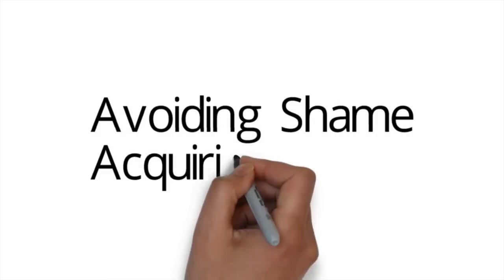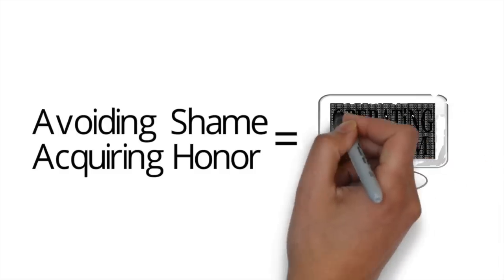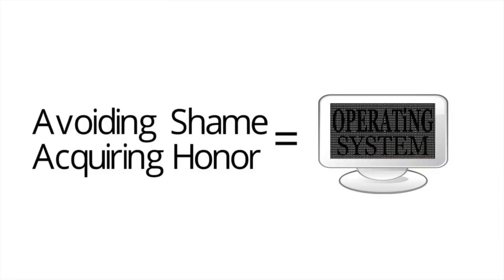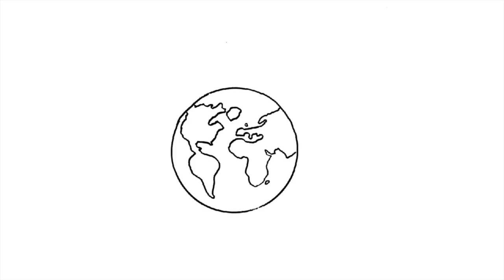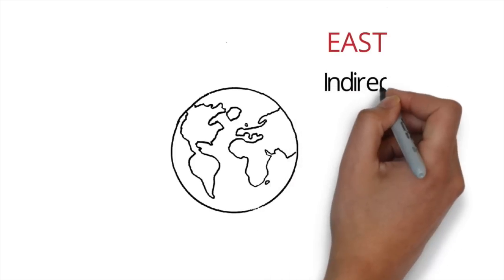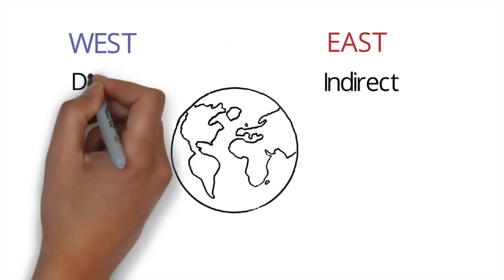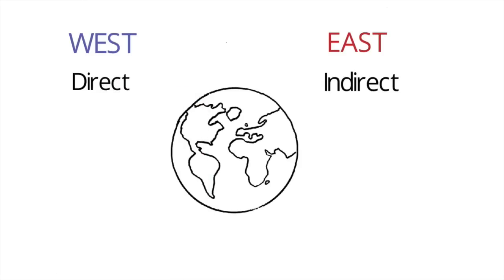Avoiding shame and acquiring honor is the operating system behind everyday life in non-Western cultures. That's why honor-shame cultures speak indirectly, to preserve face and harmony. Talking directly can be offensive, so use words to communicate honor, not just ideas.